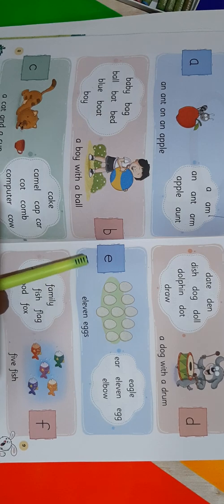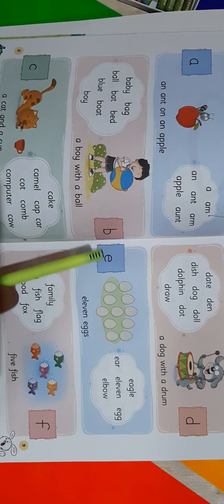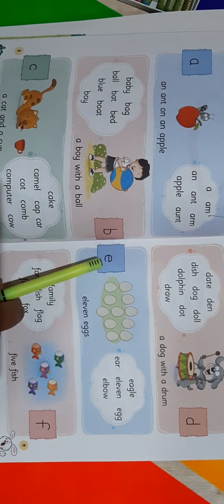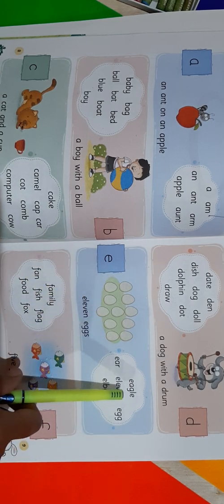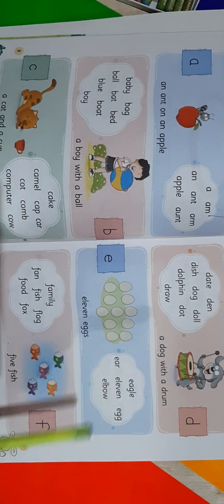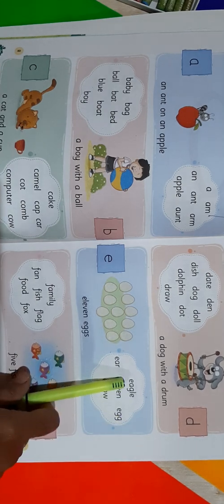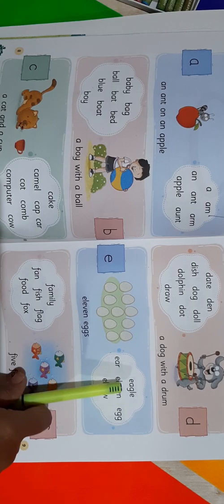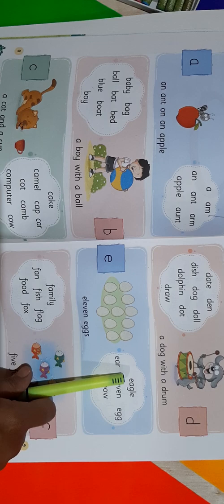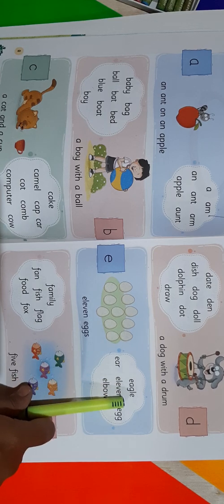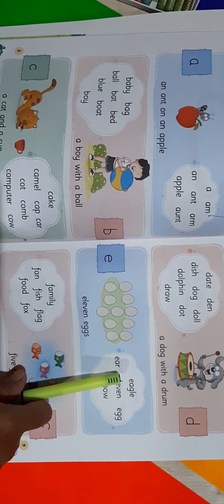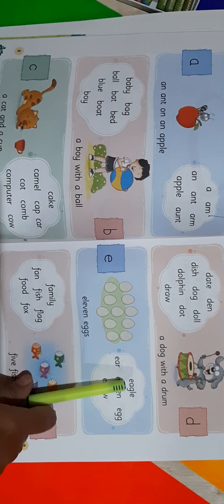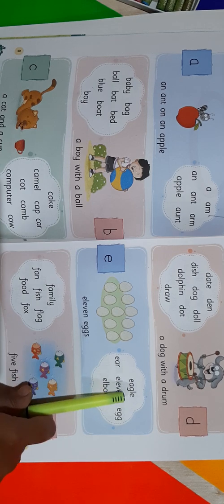Now come to the next letter. Next letter is E. We will read the words starting from the letter E. So come to the words. E-A-G-L-E. Eagle. Read it once again: E-A-G-L-E. Eagle. It's a bit bigger word, right? Repeat once again: E-A-G-L-E. Eagle.